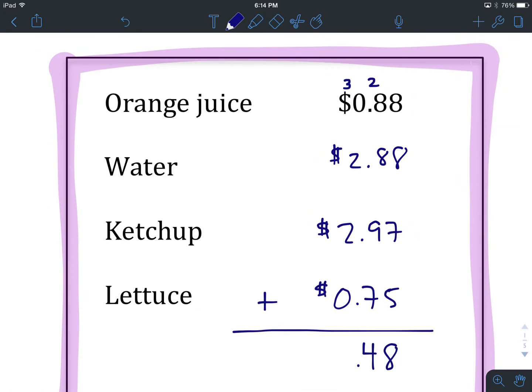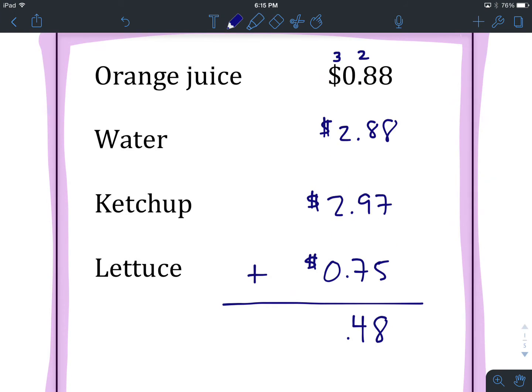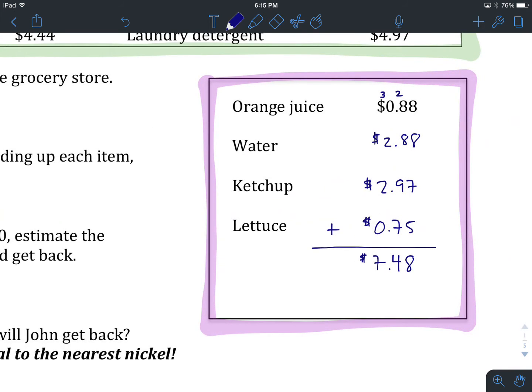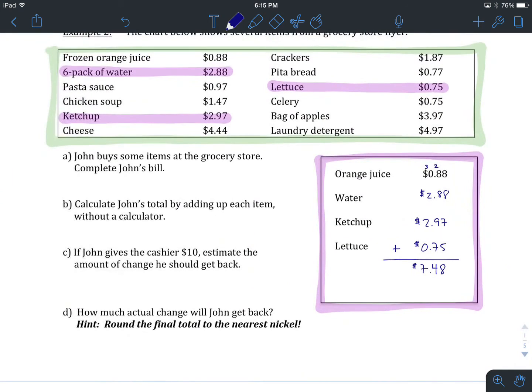Last step vertically to add these, we add all of the numbers in the 1s column. Again, including that 3 that we carried forward. We have our 3 carried forward plus our 2 is 5 plus another 2 is going to be $7. So our grand total for John's bill is $7.48. So far we have completed John's bill and we have added up each item without a calculator.